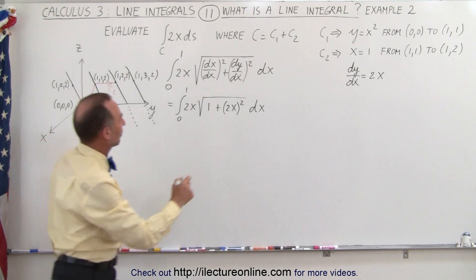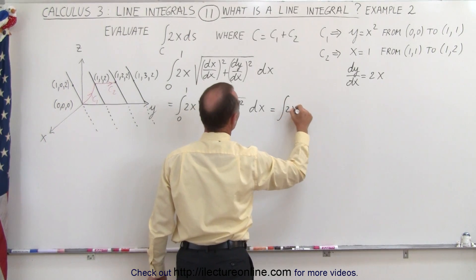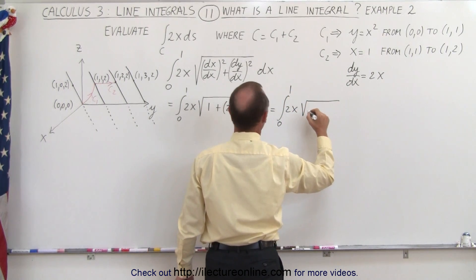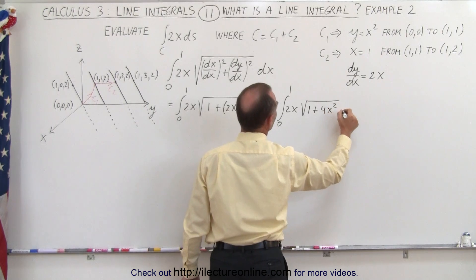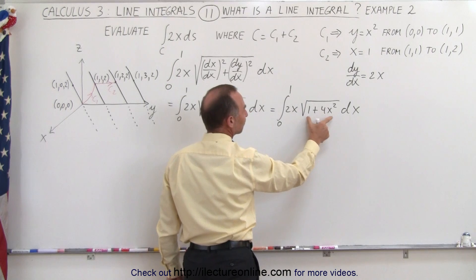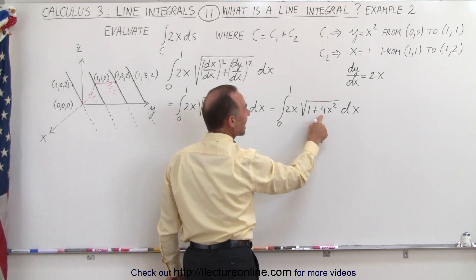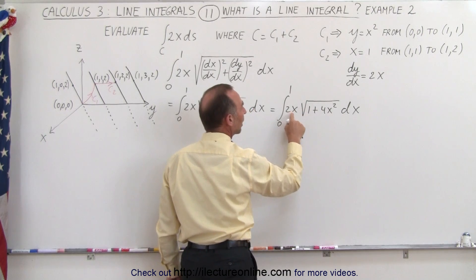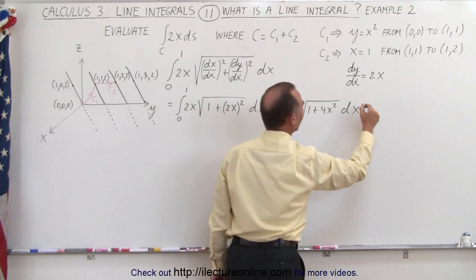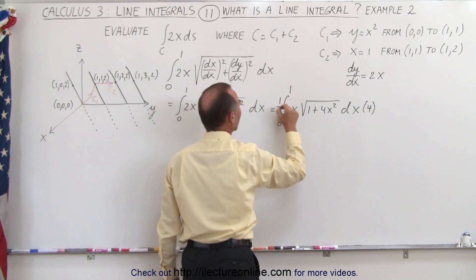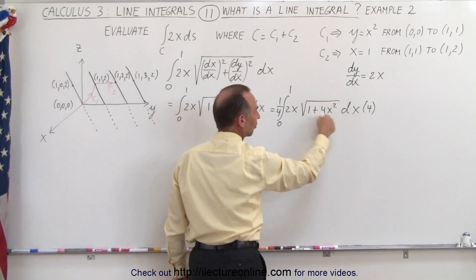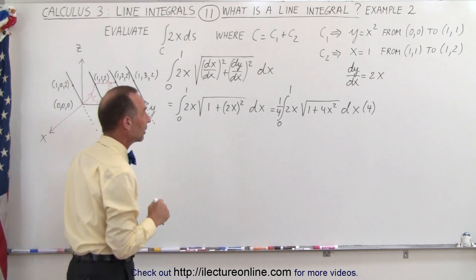All right, so that is equal to the integral from 0 to 1 of 2x times the square root of 1 plus 4x² dx. Now, if we let u equal what's inside this radical here, then du would be 8x dx, and we have 2x dx, so we need an 8x dx, so we need to multiply this times 4 and divide by 4. So this gives us 4 times 2x dx, which is the differential of what's inside the radical, and we're now able to integrate that.